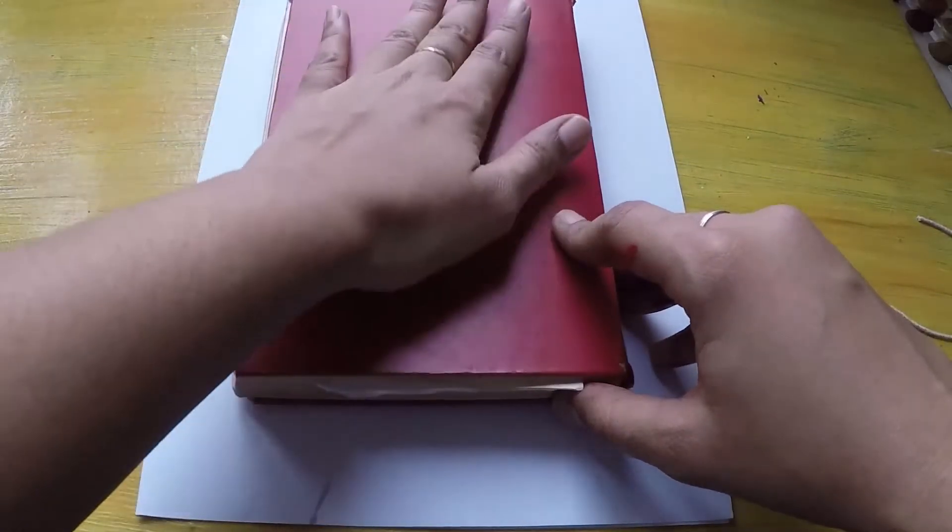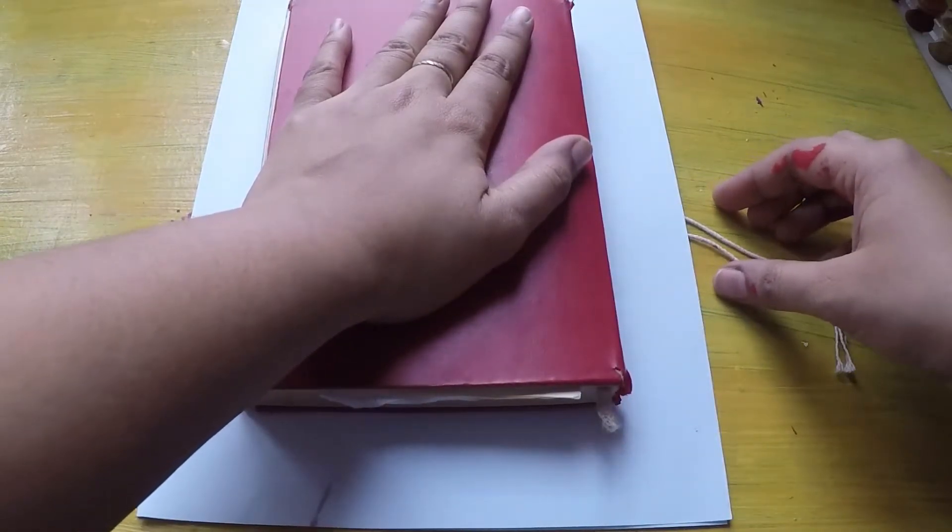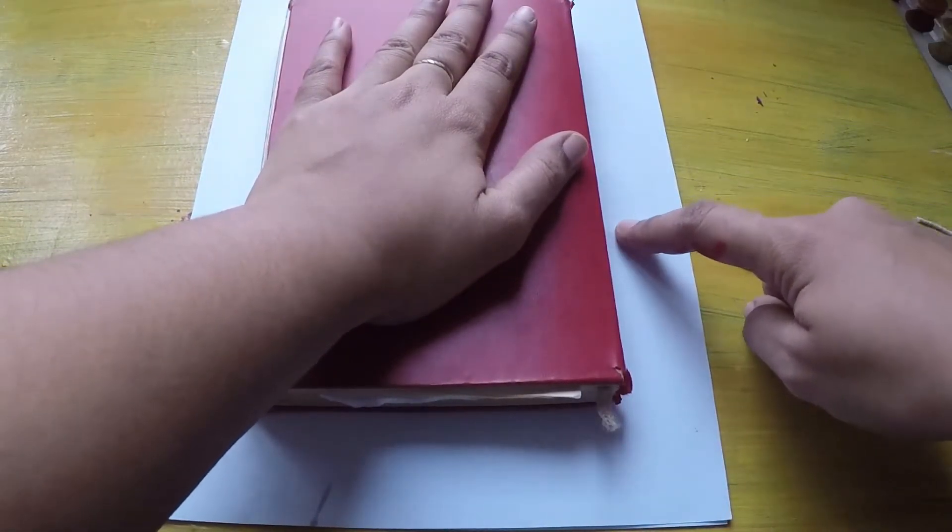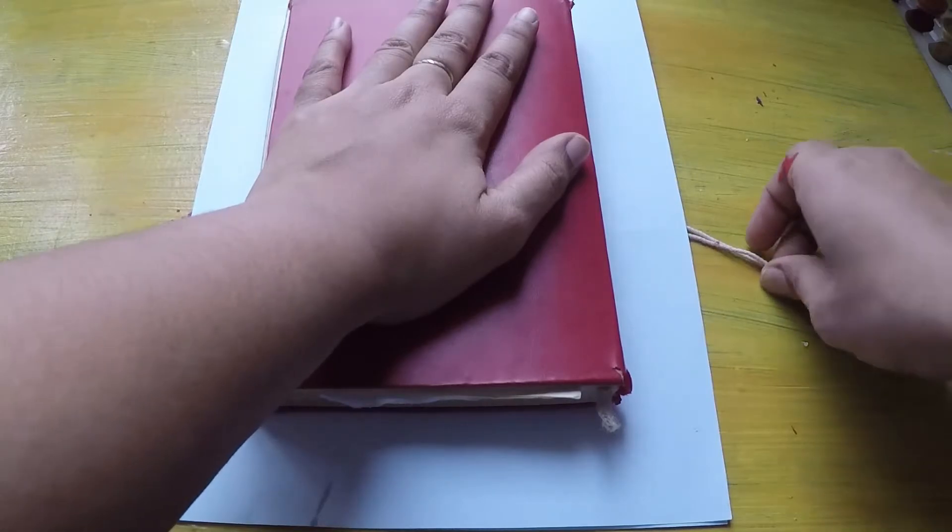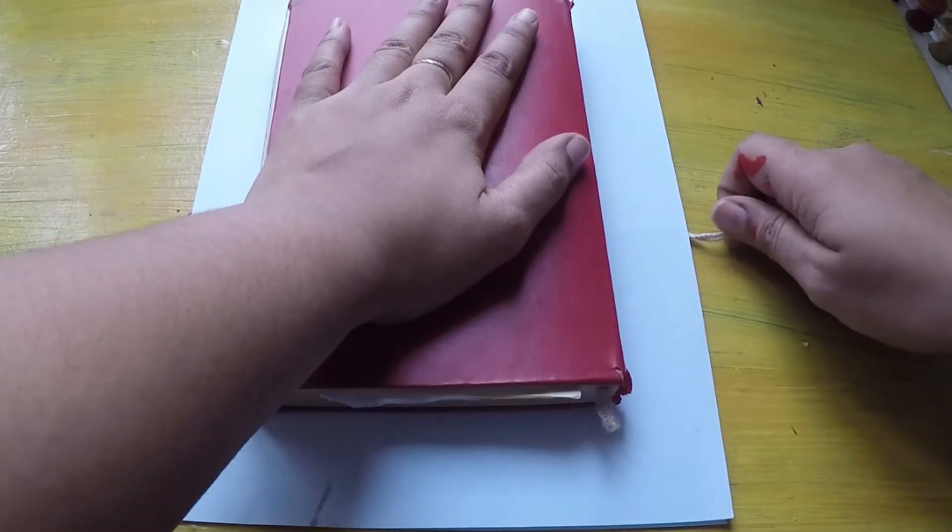We're going to place a book on it and press so that the top paper doesn't move, and you're going to pull the thread together.